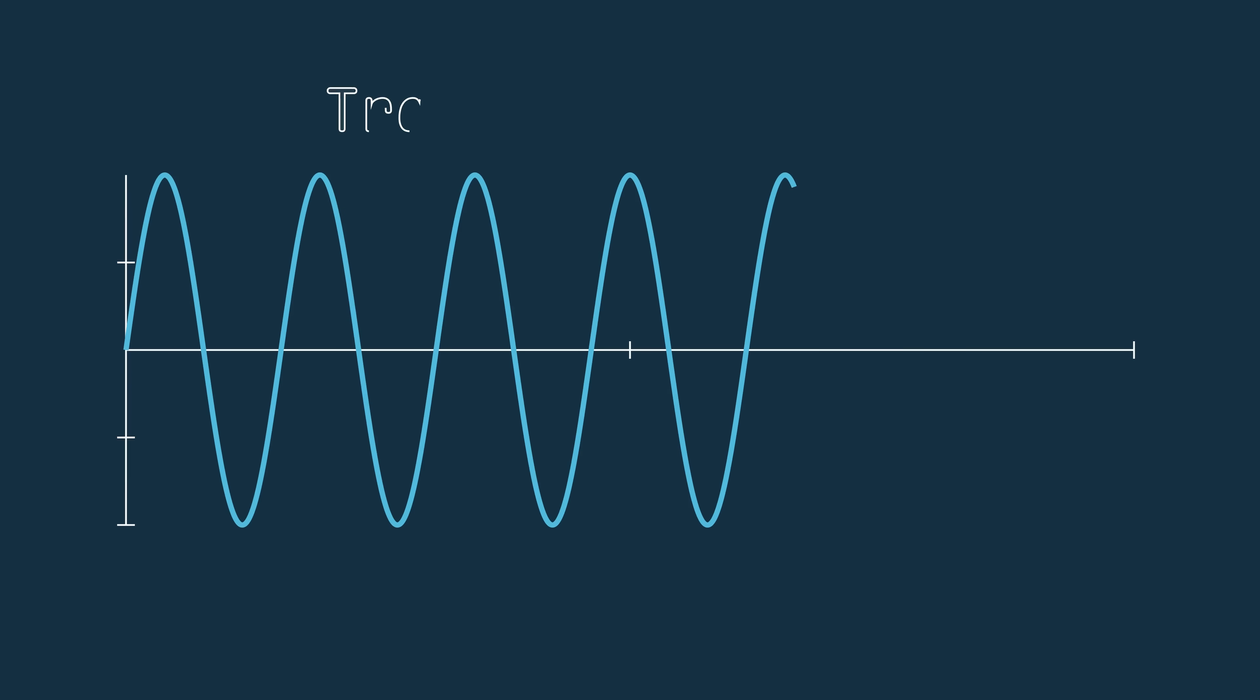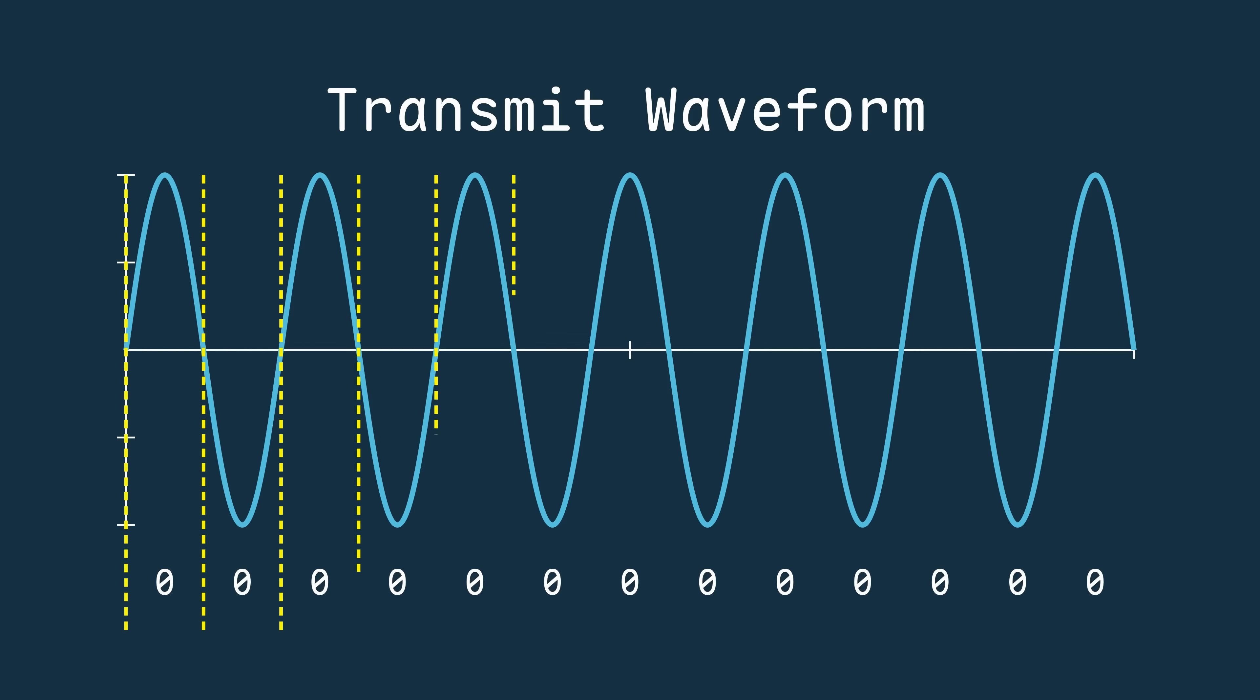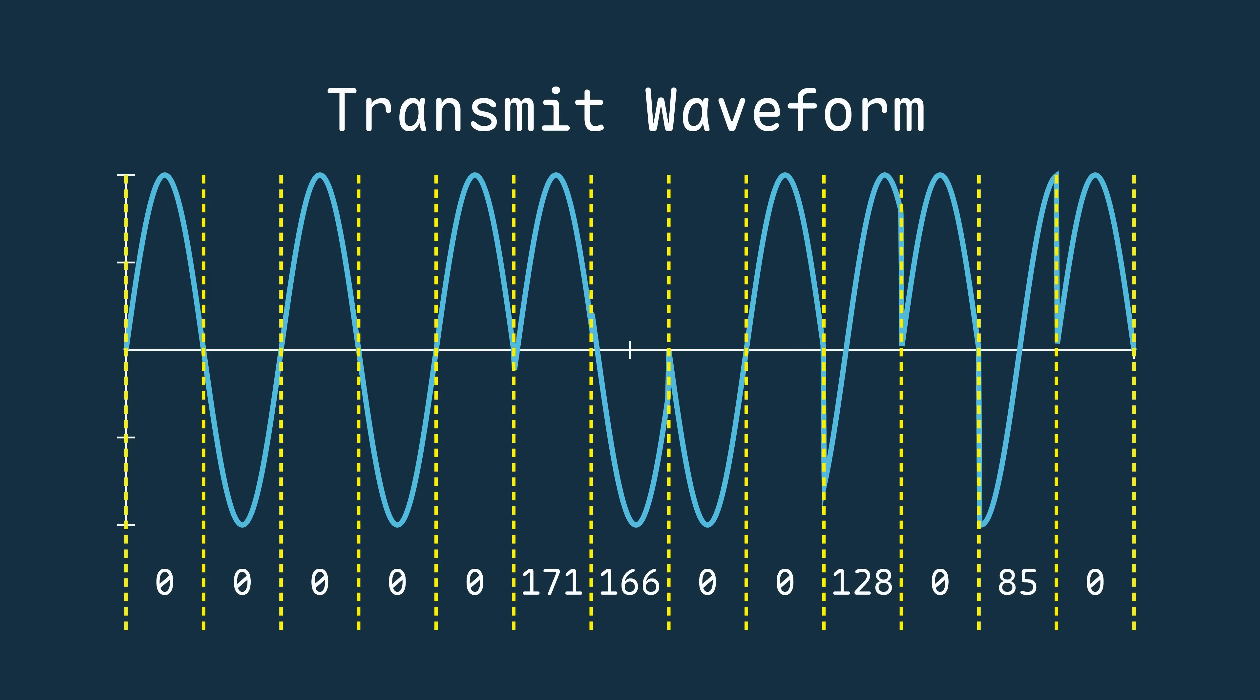The Barker code works a little differently than the linear frequency modulation we just saw. Instead of directly influencing the frequency, it takes a sequence of binary numbers, 0 or 1, and applies them to the signal by either giving that section a 0 degree phase shift or a 180 degree phase shift.